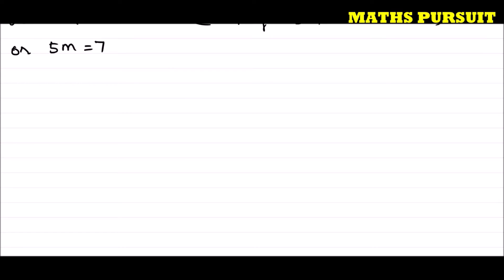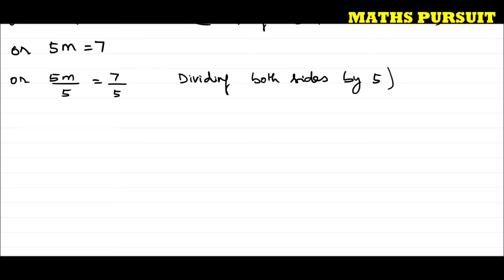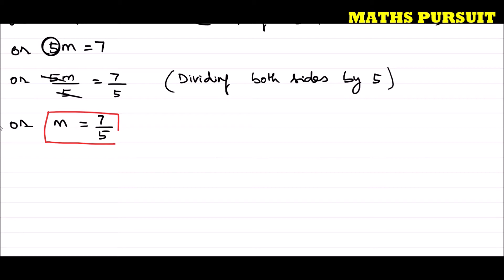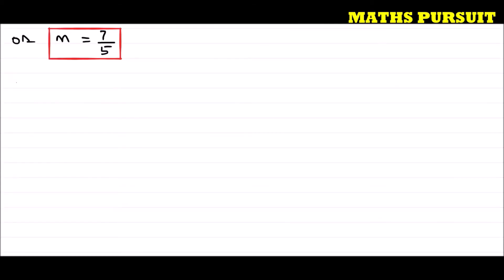3m plus 2m is 5m, so 5m is equal to 7. Dividing both sides by 5: 5m divided by 5 is equal to 7 divided by 5. I divided both sides by 5 to eliminate the 5 from m. Therefore m is equal to 7 upon 5. We got the value of m as 7/5 and this is our answer.